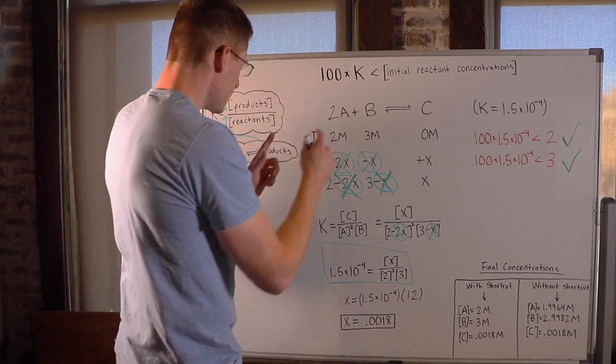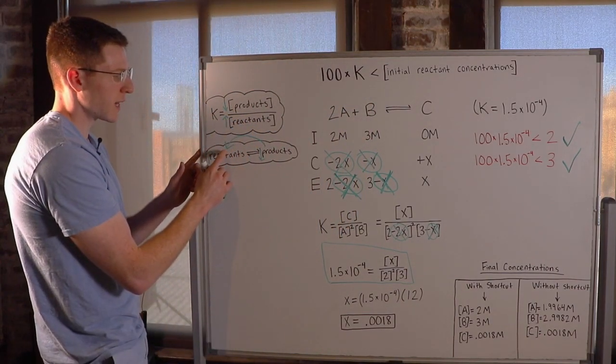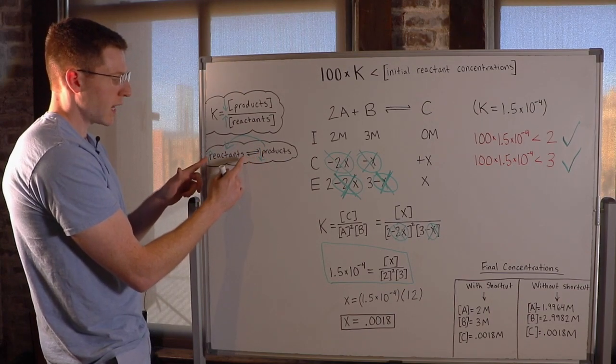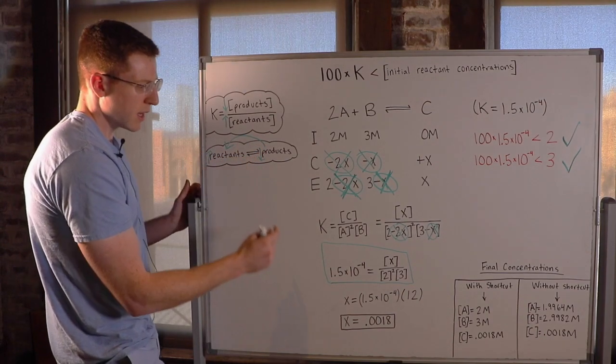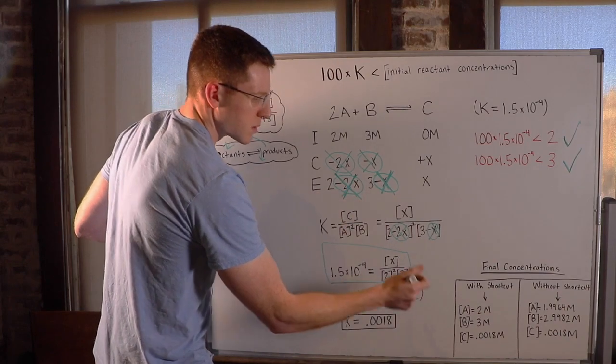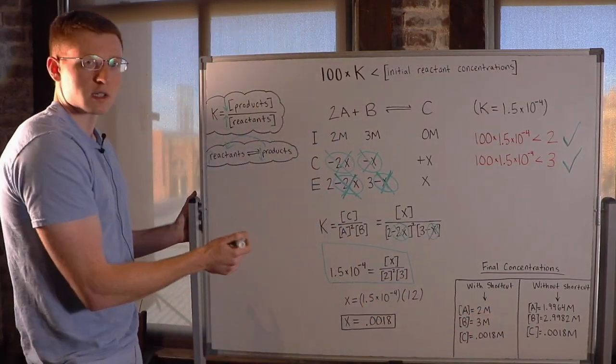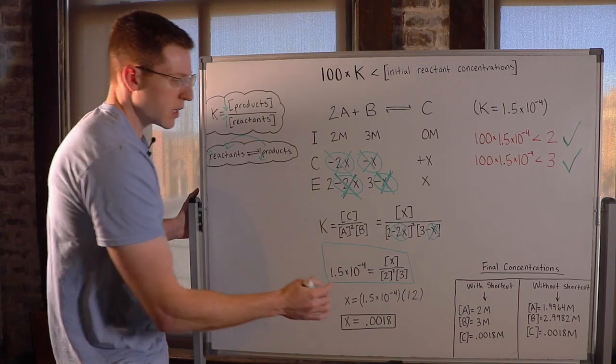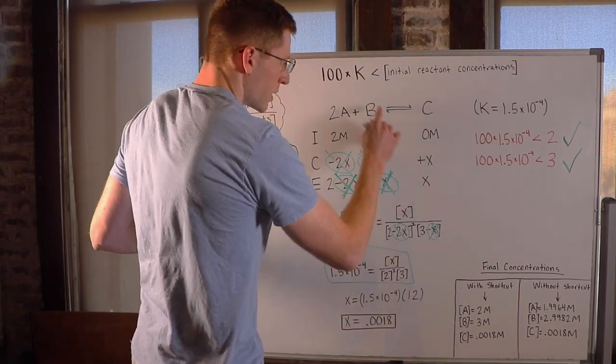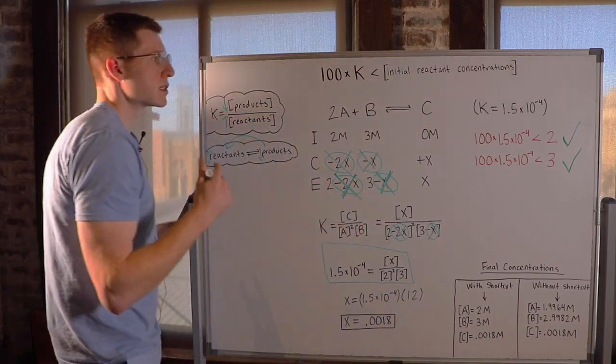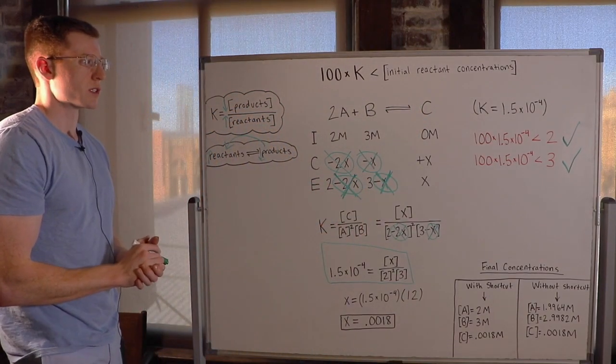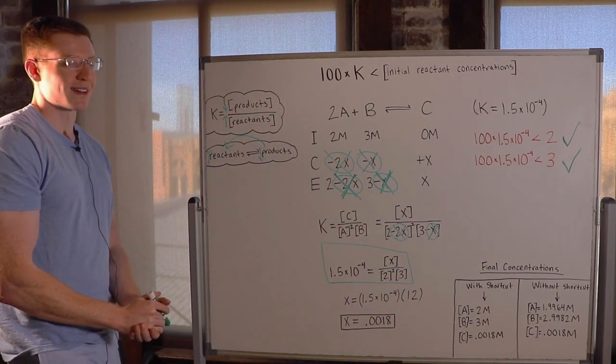So you can see that again, when we have a very small K, it means that so little of our reactants are going into products. The reaction is so reactant favored that we don't have to consider these X's because look how small of a difference they made and look how much easier it made it to solve this equation. So this is when you can use the shortcut rule when 100 times K is less than the initial reactant concentrations. So I really hope this video helped you guys out and I'll see you in the next one.